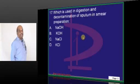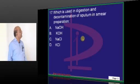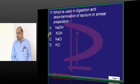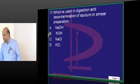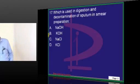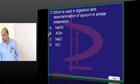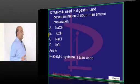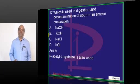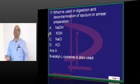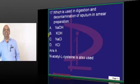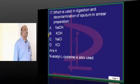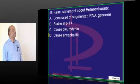To digest and decontaminate sputum in sputum preparation, we use NaOH and N-acetylcysteine. If you answered this wrong, don't worry — this is a tricky question.